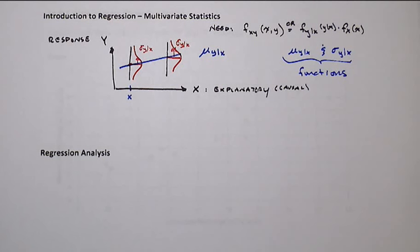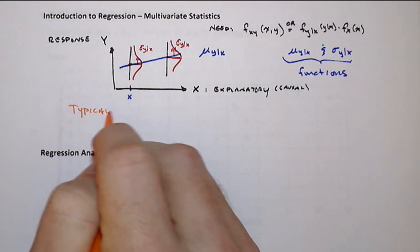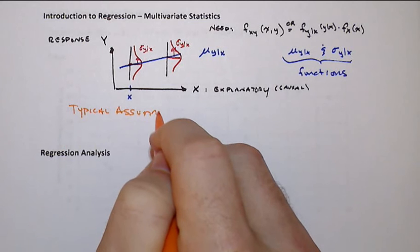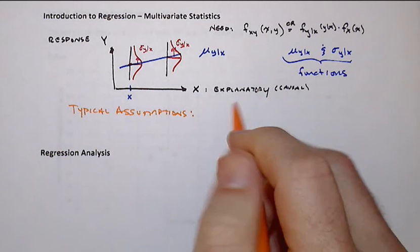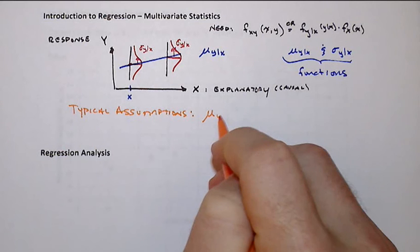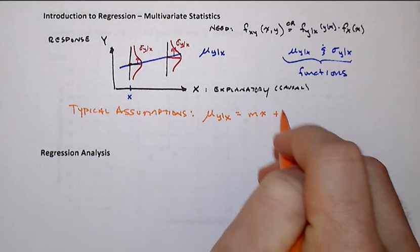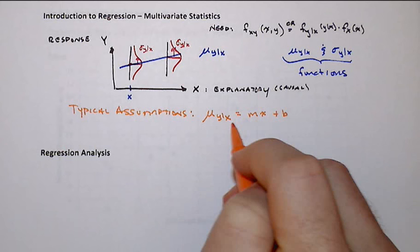Now, the typical assumptions that we employ in these regression models are that first our conditional mean will be of a straight line form. All right, so this would make this linear regression if we use linear regression if we're doing it this way.